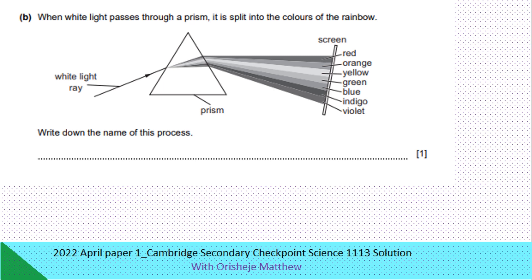When white light passes through a prism, it is split into the colors of the rainbow. Write down the name of this process. It's called dispersion of white light.